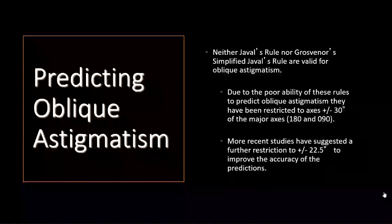What about predicting oblique astigmatism? Neither Javal's rule nor Grosvenor's simplified rule are valid for oblique astigmatism. This is due to the poor ability of these rules to predict oblique astigmatism, and usually oblique astigmatism represents corneal disease like keratoconus.